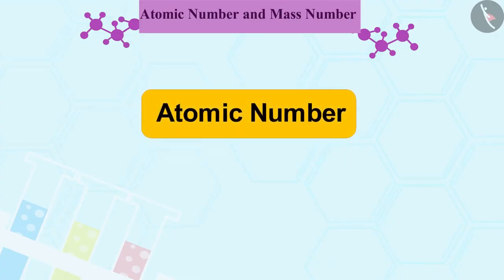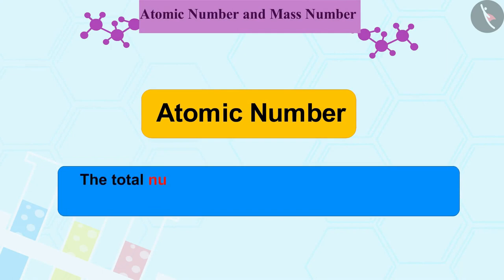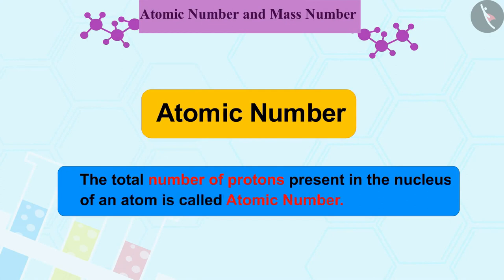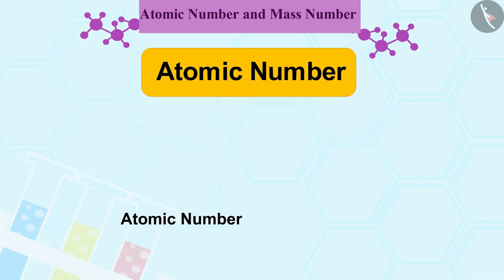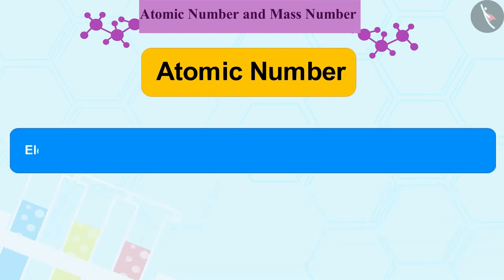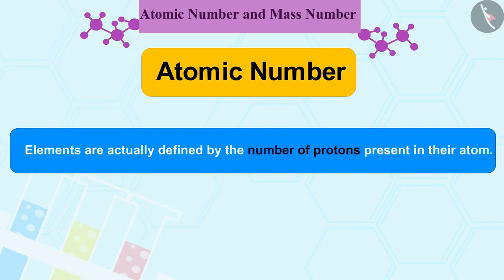Let us first learn about Atomic Number. The total number of protons present in the nucleus of an atom is called Atomic Number. It is denoted by Z. All atoms of an element have the same atomic number Z. In fact, elements are actually defined by the number of protons present in their atom.